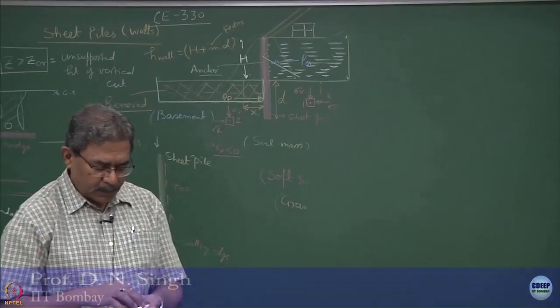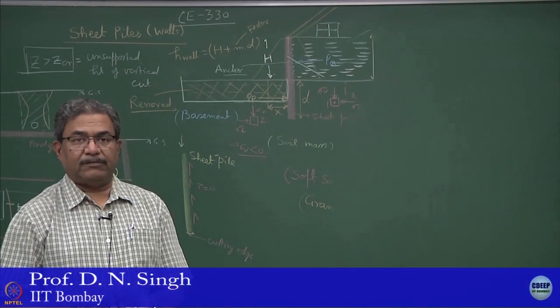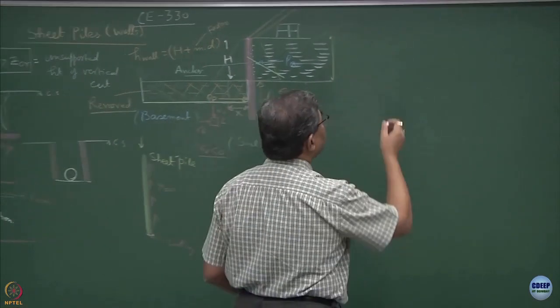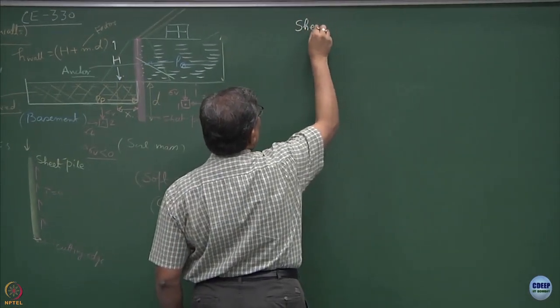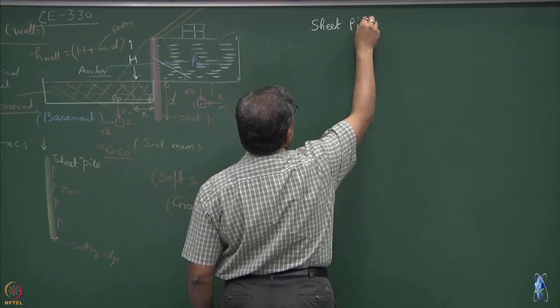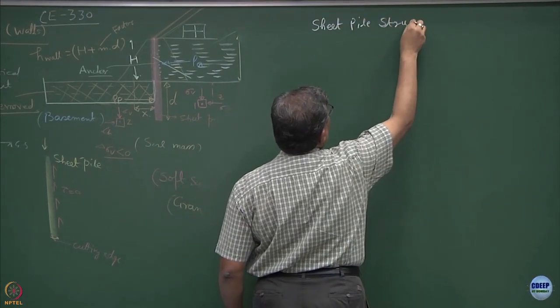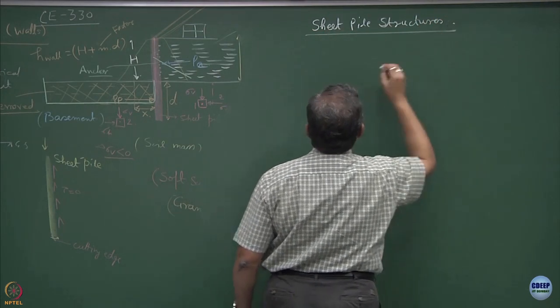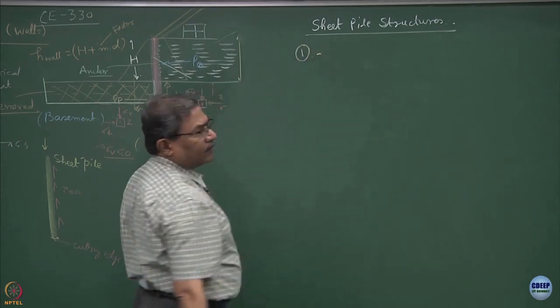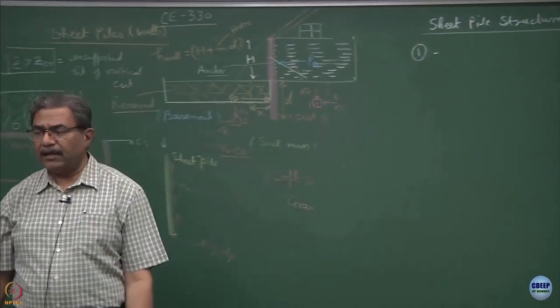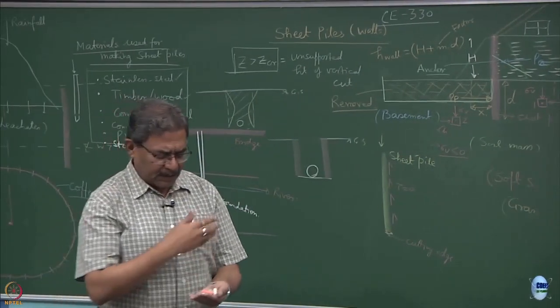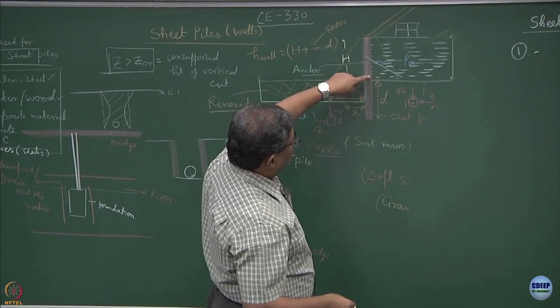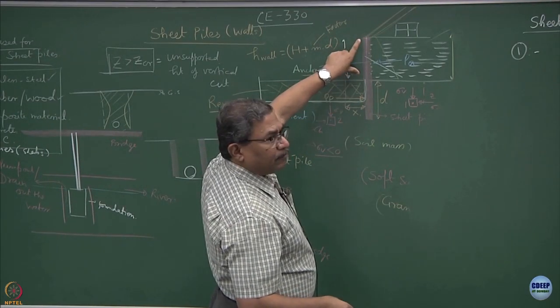Now moving on to what type of structures can be created by using sheet piles. The first structure we will create is a cantilever sheet pile, because as I described earlier most of these piles are acting like a cantilever. This is the anchorage and this is the free portion.